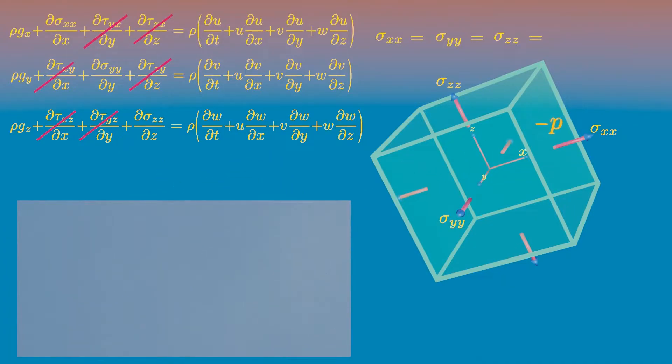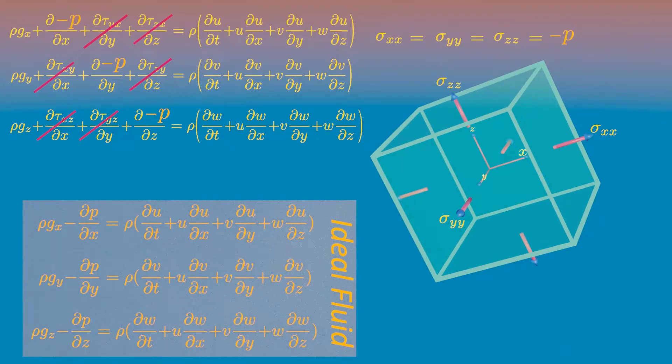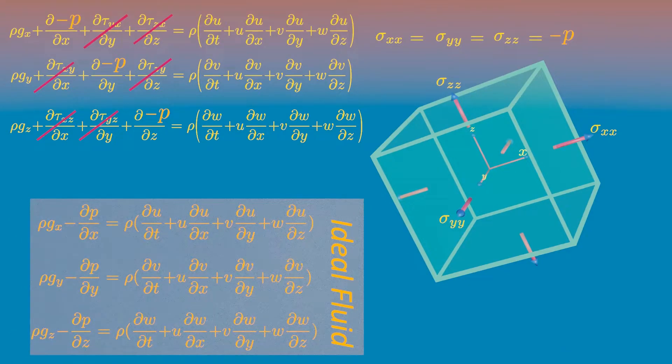Then, substitute these pressure and simplify you will get. These equations are called the Euler equations of motion, expressed in x, y, z coordinates.